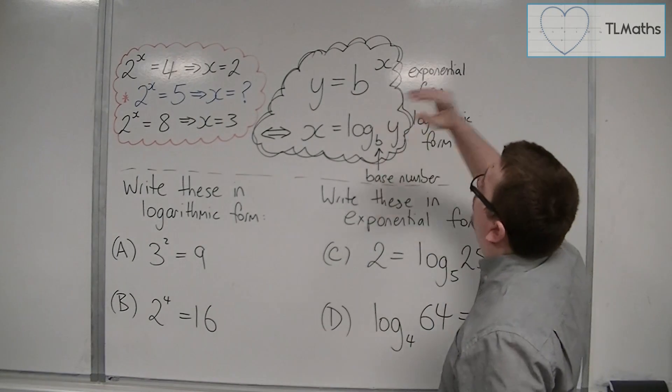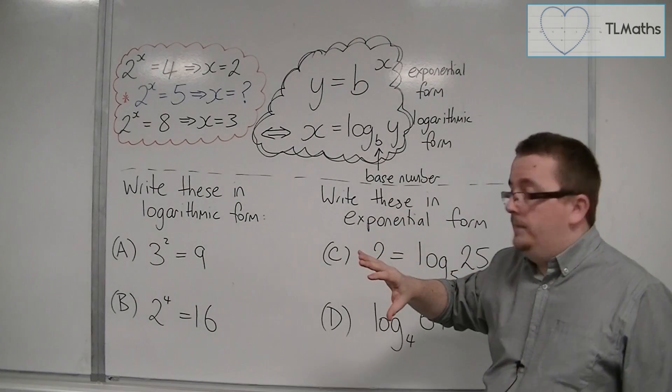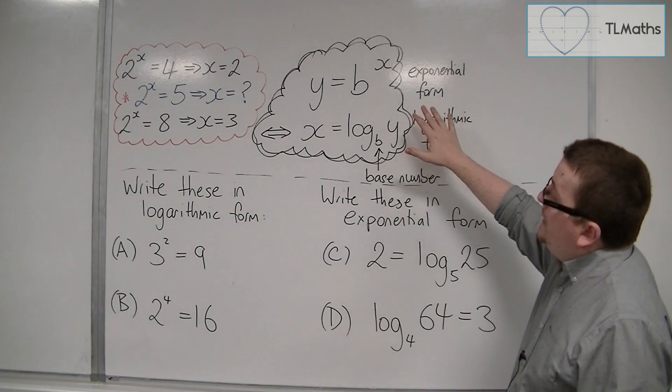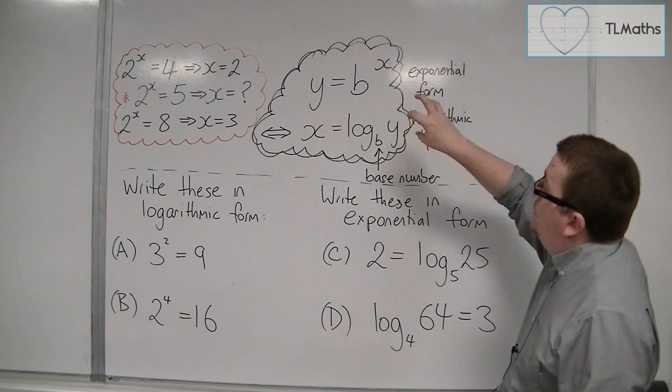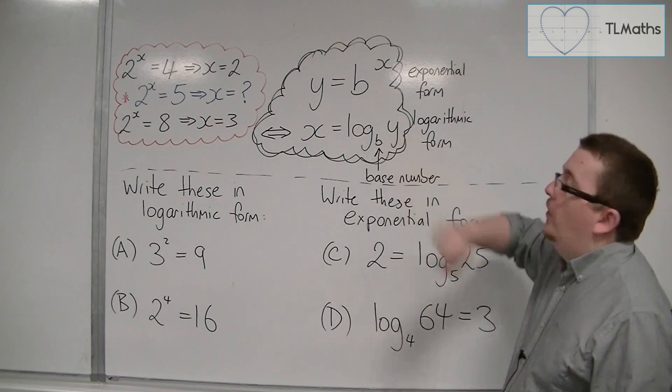So this is how we go from exponential form to logarithmic form, and vice versa. y is equal to b to the x can be taken into a new form, saying x is equal to log base b of y.